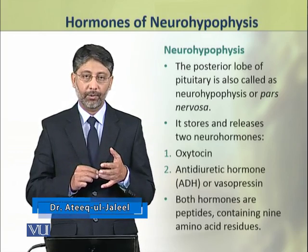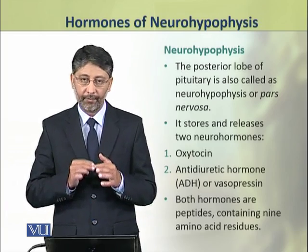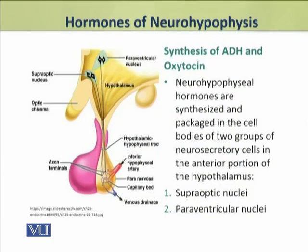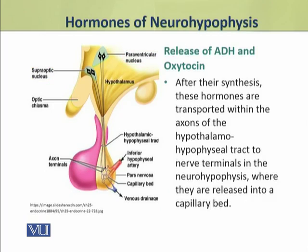Both these hormones are peptides containing 9 amino acid residues. ADH and oxytocin are synthesized and packaged in the cell bodies of two groups of neurosecretory cells of the anterior portion of the hypothalamus. These neurosecretory cells are the supraoptic nuclei and paraventricular nuclei.